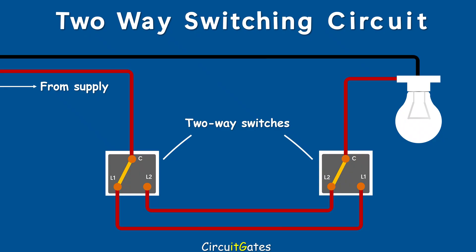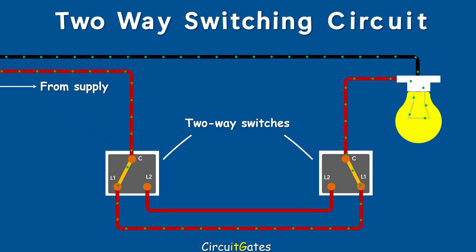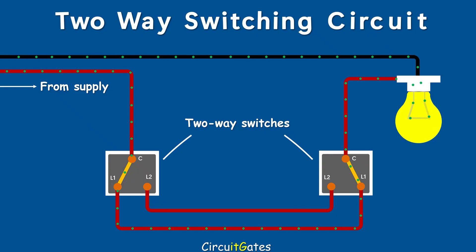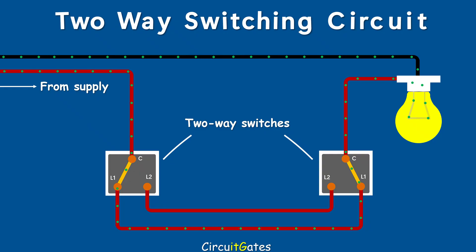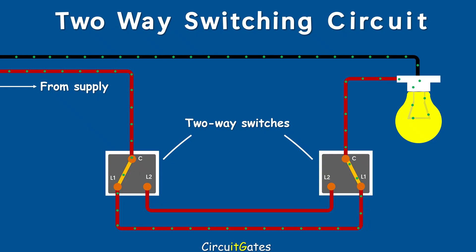In this light switching circuit, the lamp illuminates if the selectors of the two switches are pointing to the same terminals. For example, if both are pointing to terminals labeled L1, the lamp illuminates. If the selectors of the two switches are pointing to different terminals — say one is pointing to terminal L1 and the other is pointing to terminal L2 — the lamp will not be illuminated.